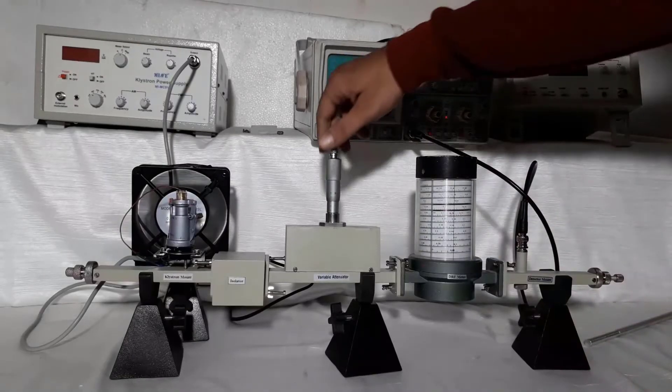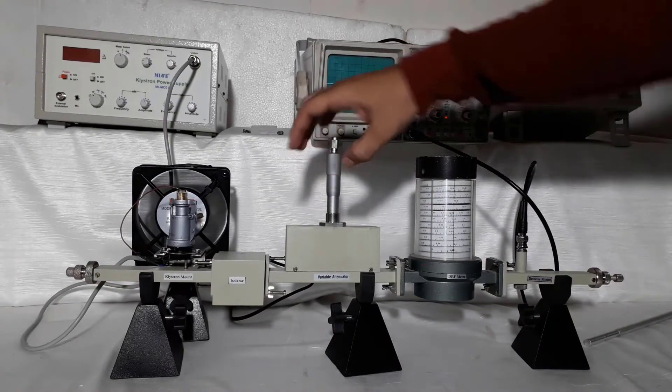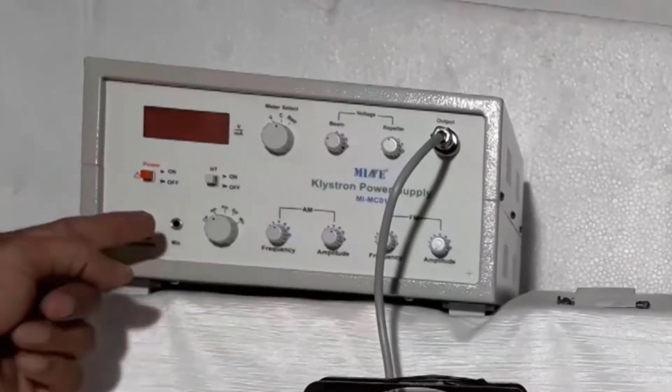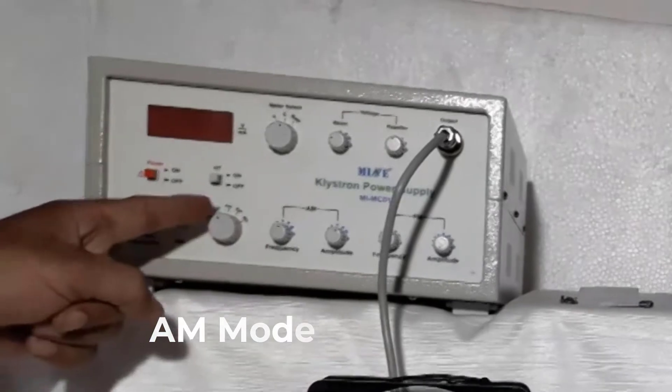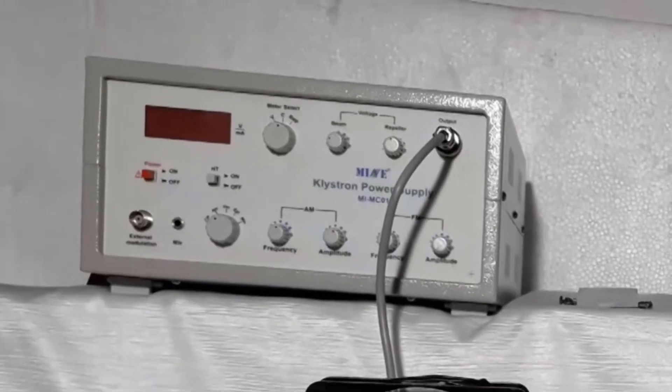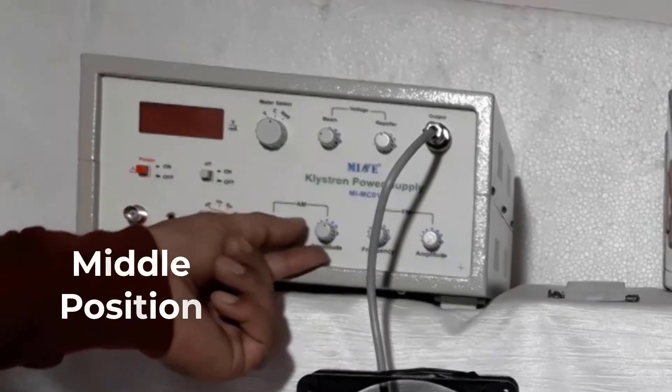Set variable attenuator at no attenuation. Set klystron power supply mode switch at AM. Set frequency and amplitude knob of AM at middle position.